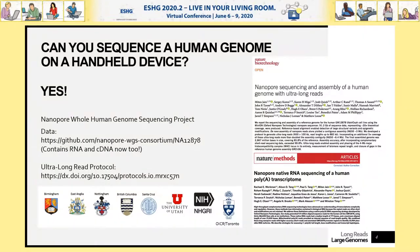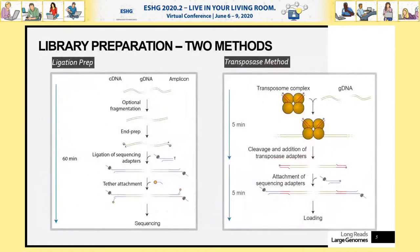The ultra-long read protocol is particularly interesting. There are essentially two ways to make a nanopore library. The first is the ligation prep — you take DNA, shear or fragment it, do an end prep and ligation, attach tethers, and sequence. The second is a transposase method, which is very quick — about 10 minutes from DNA to loaded library. In our original human work, we were exploring both of these.